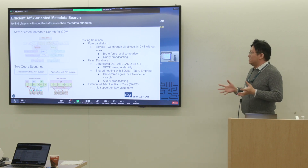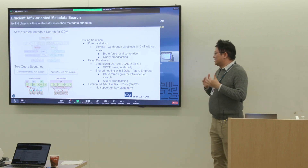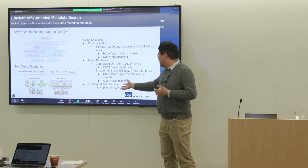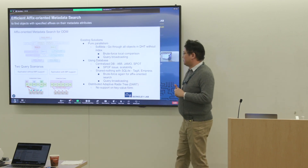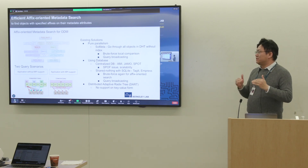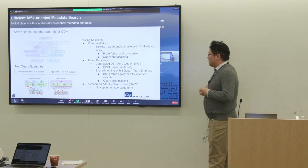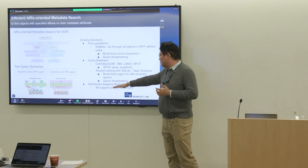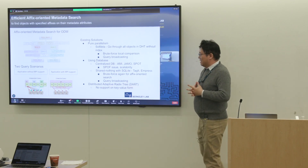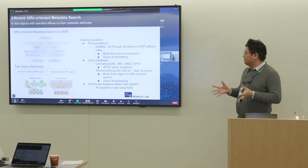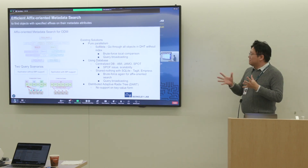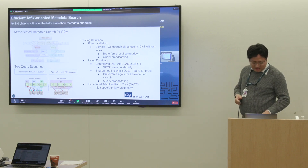In 2018, during my internship here, I devised DART — the Distributed Adaptive Radix Tree — to address affix-based keyword search in a distributed setting. At that point, we lacked support for key-value queries on metadata attributes and efficient infix query support, which were still needed.